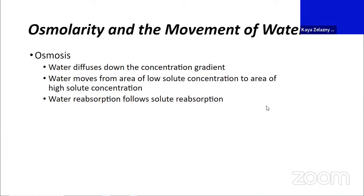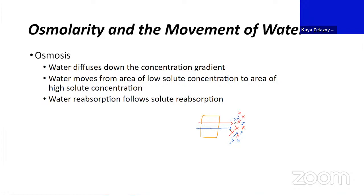Another way to think about this, which we mentioned for the proximal tubule: you can think of water reabsorption as following solute reabsorption. When we had a proximal tubule cell with solute moving and creating high solute concentration in the peritubular fluid and plasma, water goes ahead and follows that to water down that region. So this is what's happening in your kidneys as we reabsorb water—it's moving towards areas of high solute concentration created when we reabsorb a bunch of solute.